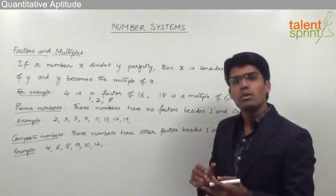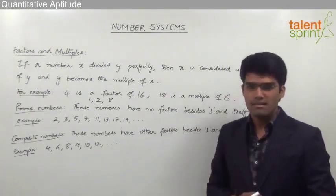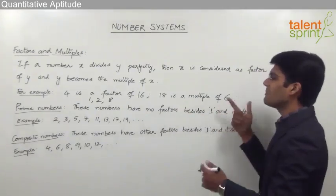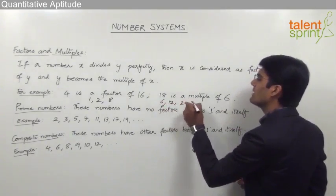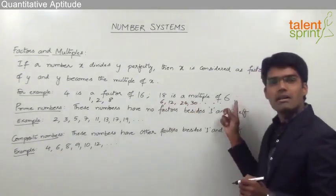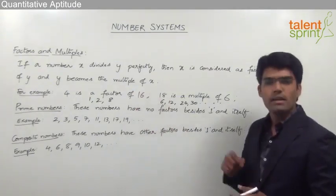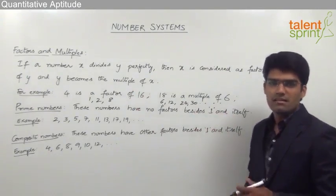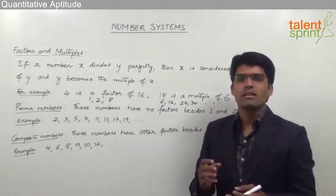Only those numbers which are exactly divisible by the given number should be considered as multiples of that number. For example, apart from 18, the other multiples of 6 are 6, 12, 24, 30 and so on, because all these numbers are divisible by 6. So factors are those numbers which can exactly divide the given number, and multiples are those numbers which are exactly divisible by the given number.